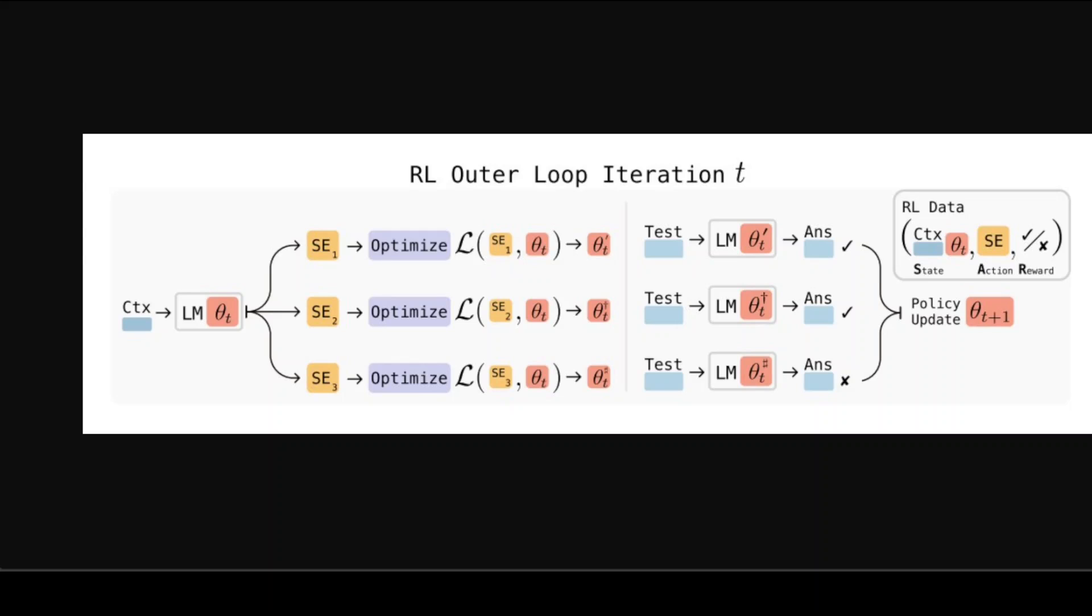Then in the inner loop, the model actually applies the self-edit through supervised fine-tuning using LoRA or low-rank adaptation, which is an efficient way to update model weights. After the update, they test how well the adapted model performs on the target task. Here's the clever part: the model gets rewarded based on how much its performance improved. If a particular self-edit strategy worked well, the model learns to generate similar edits in the future. If it didn't help, the model learns to avoid that approach. This creates a feedback loop where the model gets better and better at knowing how to adapt itself.